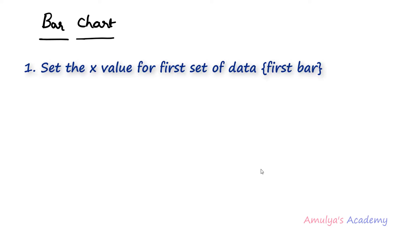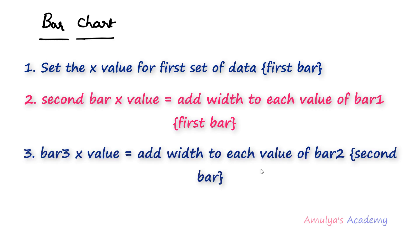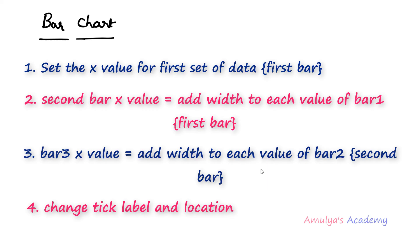To summarize: in a multiple bar graph, first set the x value for the first set of data using np.arange with the length of x, giving values 0 to n. For each subsequent bar, add the width to the previous bar's x values. Finally, use plt.xticks() to change the tick label and tick location. That's it for now — thank you for watching, don't forget to subscribe, and I'll see you in the next class.